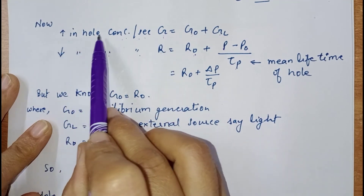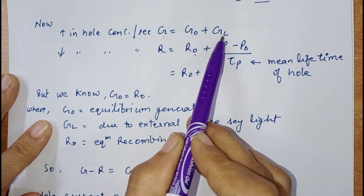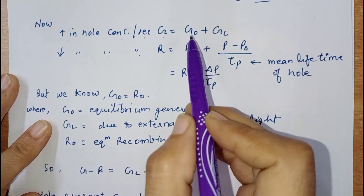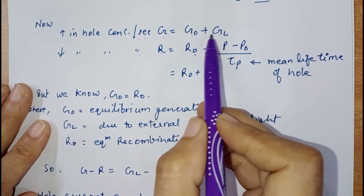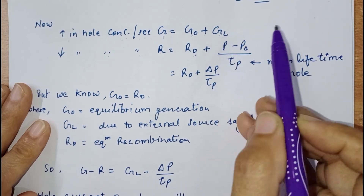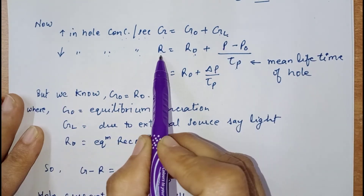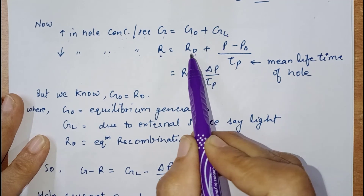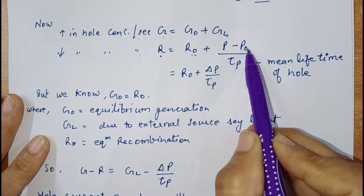Now, g is the rate of increase in hole concentration per second, and g = g₀ + gL, where g₀ is the thermal equilibrium generation of electrons or holes, and gL is the generation of electron-hole pairs due to the application of light. The recombination rate r is the decrease in hole concentration per second, and r equals the equilibrium recombination rate r₀ plus the excess hole concentration change.